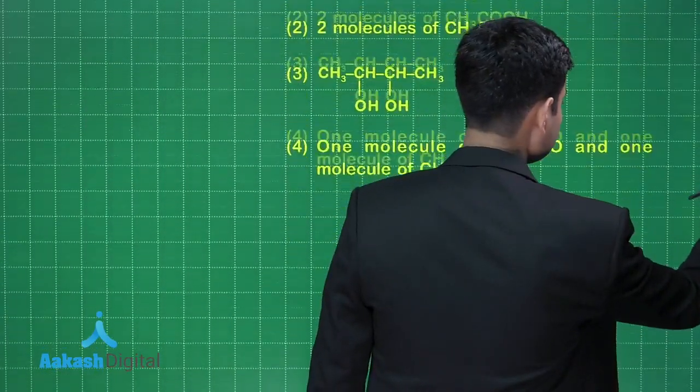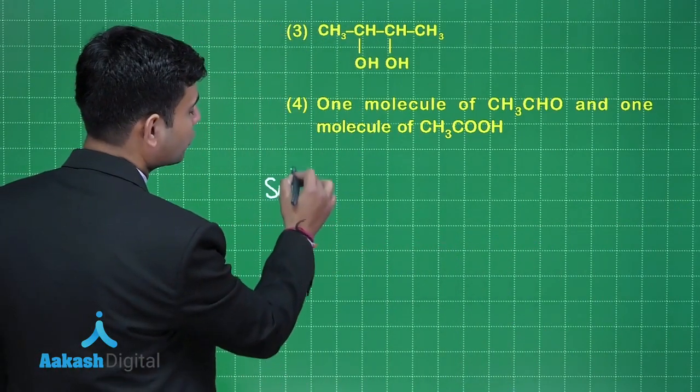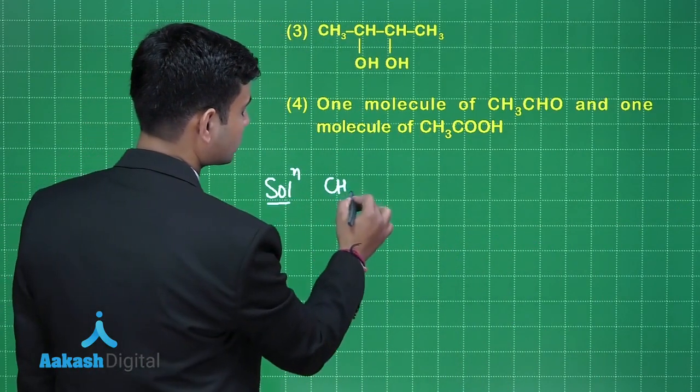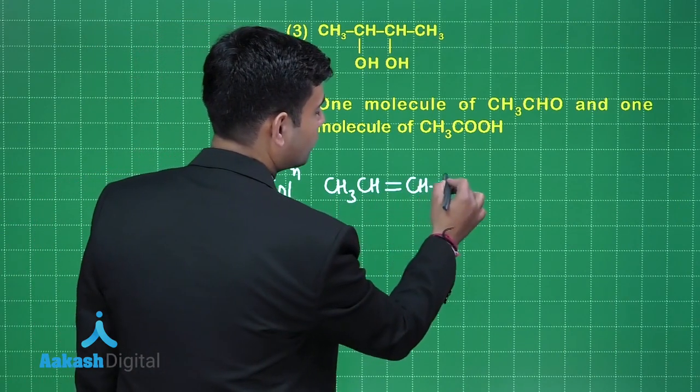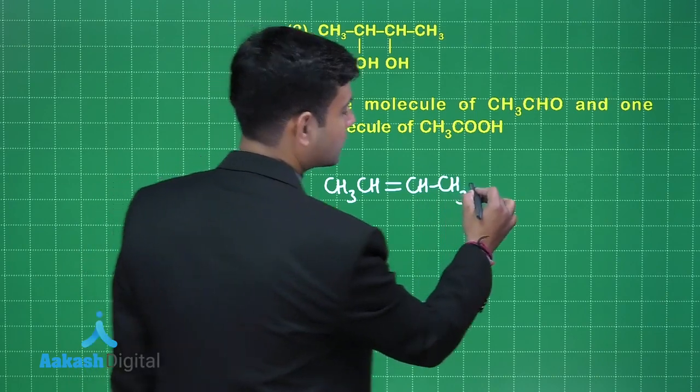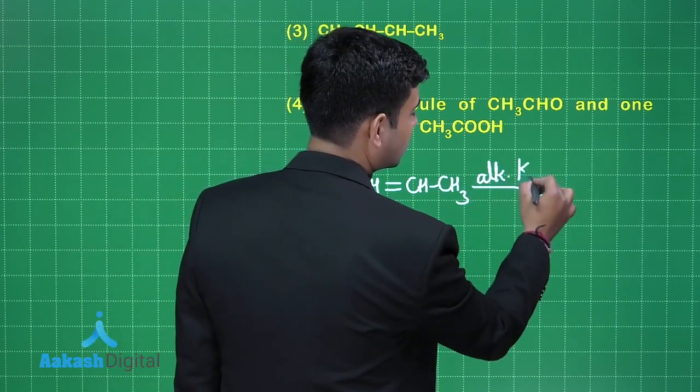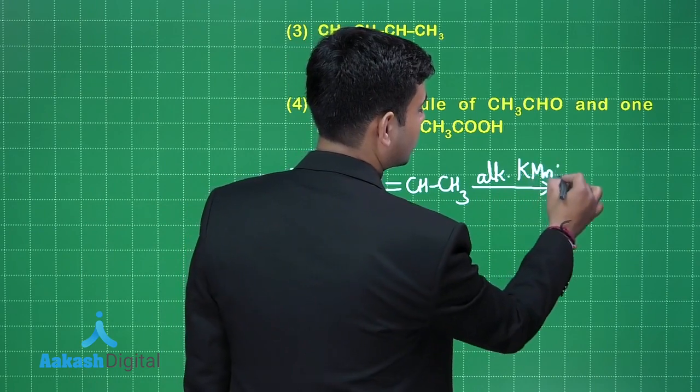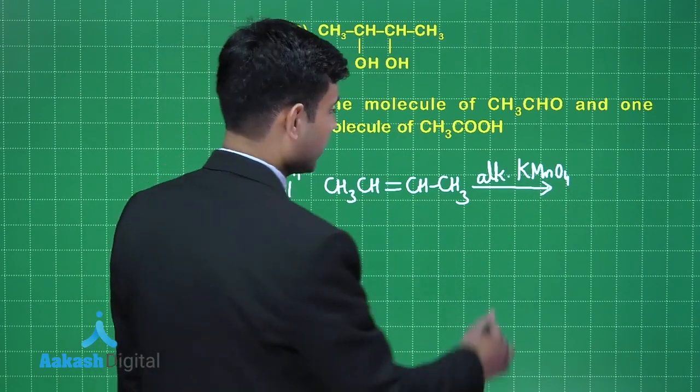Students, if I talk about this question we have butene. Butene when reacts with alkaline KMnO4 at elevated temperature, here we are considering the concentrated alkaline KMnO4, and then we are acidifying it.